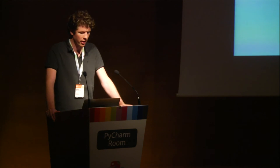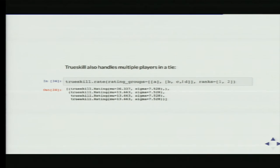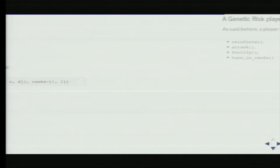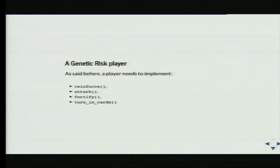TrueSkill can also handle larger groups and multiple players. For a RISK game where there's only one winner, we can say player A won the game and B, C, and D all lost. Now we can use that to rank our players and evaluate them.